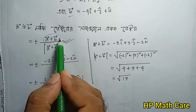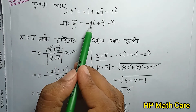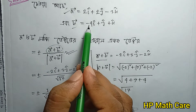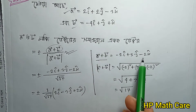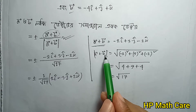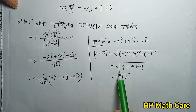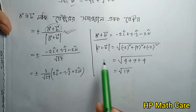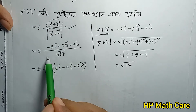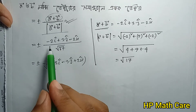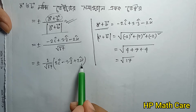We will compute 2a plus b vector. Then 2i minus 4i gives minus 2i. For the j component: 2j plus j gives 3j. For the k component: minus 3k plus k gives minus 2k. So 2a plus b vector equals minus 2i plus 3j minus 2k. And a minus b is 2a minus 3j plus 2k.